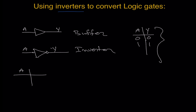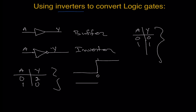For the inverter truth table: A is input, Y is output. If input is low, output will be high. If input is high, output will be low. So when input is zero, output is high, and when input is one, output is low.